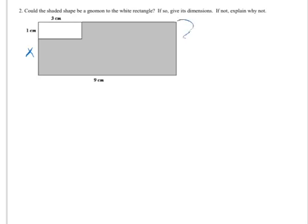This length here we know is going to be x plus 1, because it's across from the side that's made up of the x and the 1. And then we can call this piece y, and that's the only other unknown piece, because I know the last side of the shaded gnomon is 9.